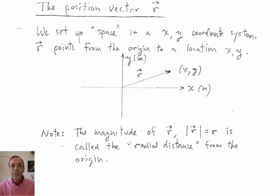Hello students. Let's continue with our discussion of vectors. Let's introduce the position vector r. When we have an experiment, it's happening in space and we set up a coordinate system in space, an x and y coordinate system.